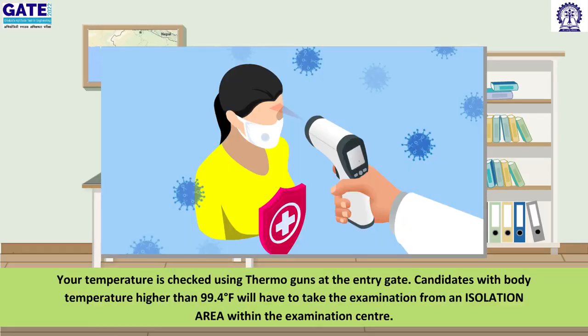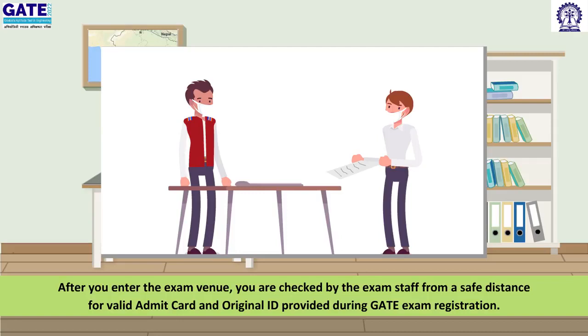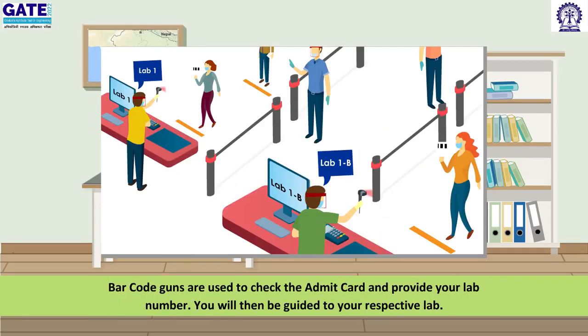Your temperature is checked using thermoguns at the entry gate. Candidates with body temperature higher than 99.4 degrees Fahrenheit will have to take the examination from an isolation area within the examination center. After you enter the exam venue, you are checked by the exam staff from a safe distance for a valid admit card and original ID provided during GATE exam registration. Barcode guns are used to check the admit card and provide your lab number. You will then be guided to your respective lab.